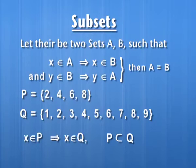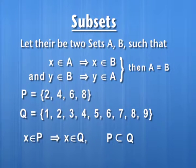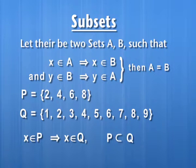Let us consider two sets P and Q. Set P contains four elements 2, 4, 6 and 8, and set Q contains numbers 1, 2, 3 up to 9. We observe that all the elements of set P are included in set Q. Symbolically, we can say that x belonging to P implies x belongs to Q. In such cases, we say that set P is contained in set Q, and we write it as P contained in Q. This symbol is for 'contained'.